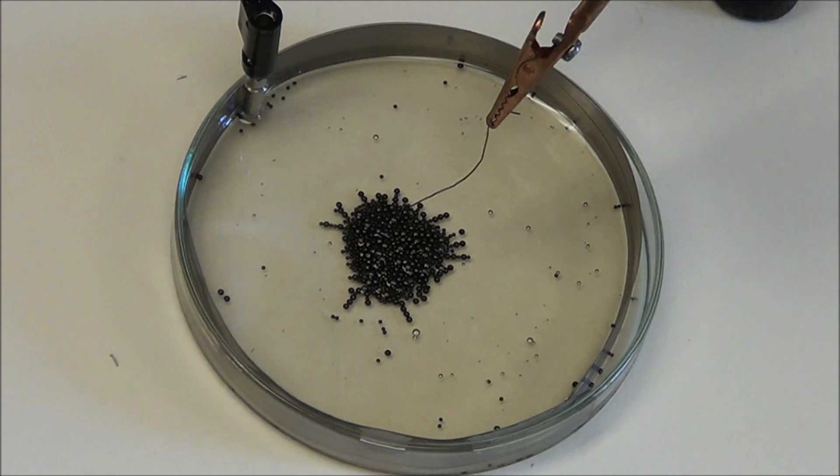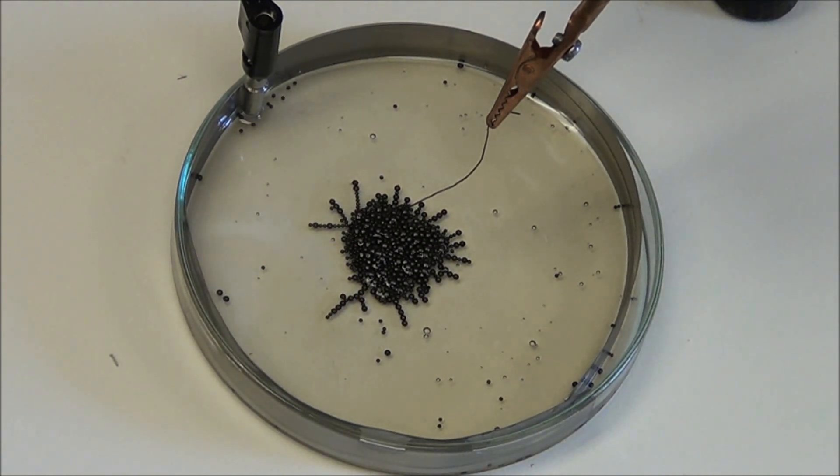But then we notice a movement. The balls start forming chains, called shooters, that try to reach the outside of the dish. A massive race is on.